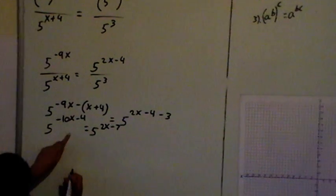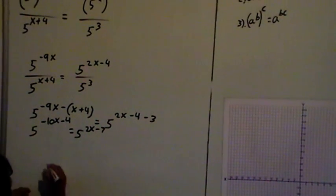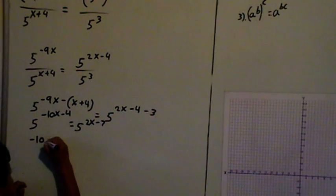Now the bases are the same, so I can equate the powers, which looks like this: minus 10x minus 4 equals 2x minus 7.